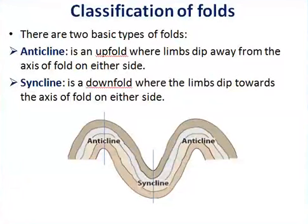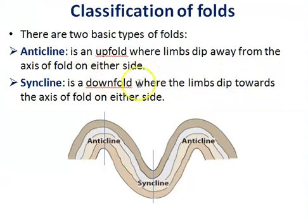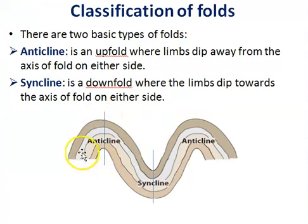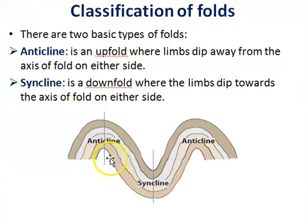Folds show a great variety of forms — some may be quite simple while others may be highly complex in their geometry and morphology. In most cases folds are simple or complex modifications of two basic types: anticline and syncline. Anticline is an upfold where limbs dip away from the axis of fold on either side, while syncline is a downfold where limbs dip towards the axis of fold on either side. Anticline folds are convex upward and their limbs dip away from the fold axis, while synclines are convex downward and their limbs dip towards the fold axis on either side.